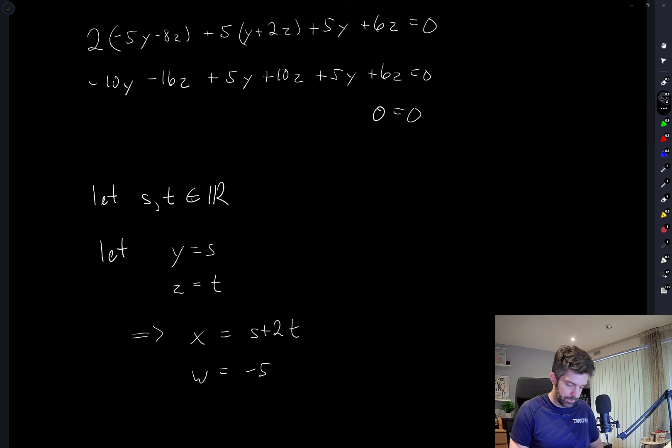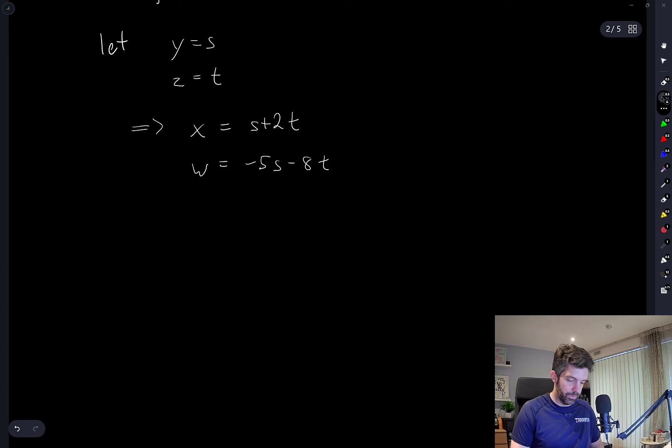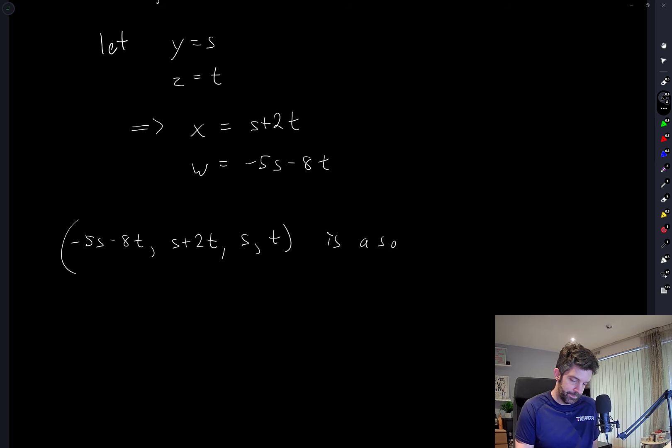And W is equal to negative 5Y minus 8Z, so that's negative 5S minus 8T. So then any vector of the form negative 5S minus 8T, S plus 2T, S and T.